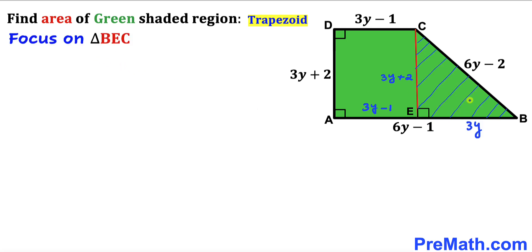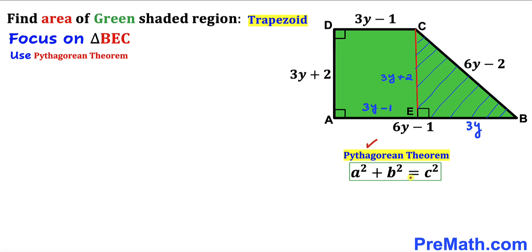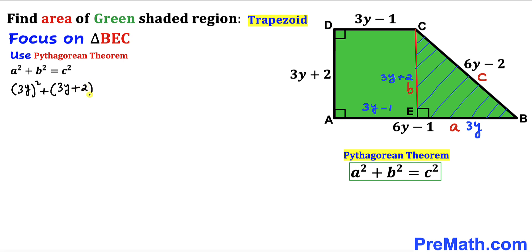Now let's focus on right triangle BEC, whose side lengths are 3Y plus 2, 3Y, and 6Y minus 2. We are going to apply the Pythagorean theorem: A² plus B² equals C², where the hypotenuse C is the longest side 6Y minus 2, side A is 3Y, and side B is 3Y plus 2.